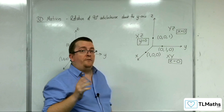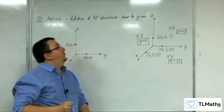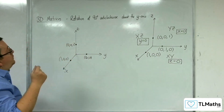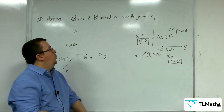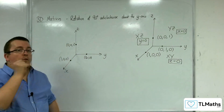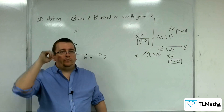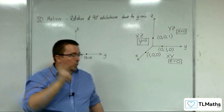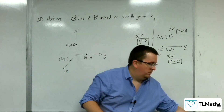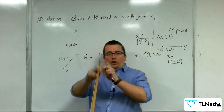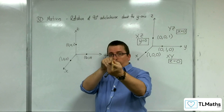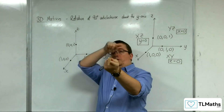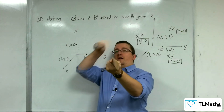Now we're going to try and find the matrix that is a rotation of 90 degrees anticlockwise about the y-axis. Once again, we are looking down the y-axis, and things will be rotating around it.